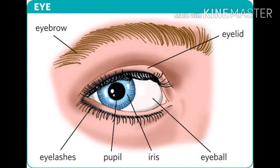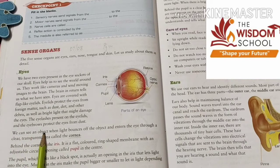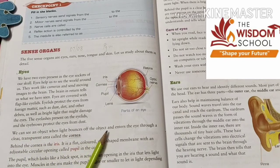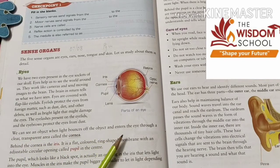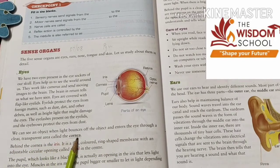In this image you can see the black part is known as the pupil, the blue part is the iris, and the white part is known as the eyeball. We can see an object when light bounces off the object and enters the eye through a clear transparent area called the cornea.